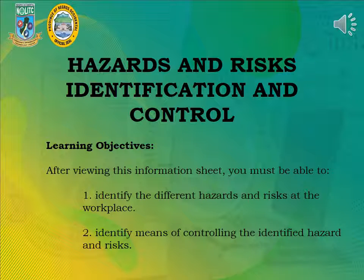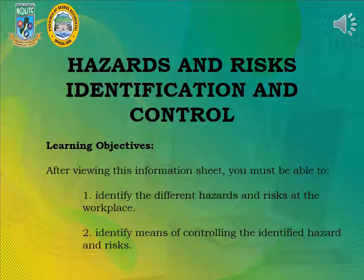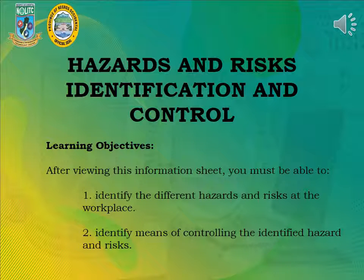Hazards and Risks Identification and Control. Learning Objectives: After viewing this information sheet, you must be able to: 1. Identify the different hazards and risks at the workplace. 2. Identify means of controlling the identified hazards and risks.